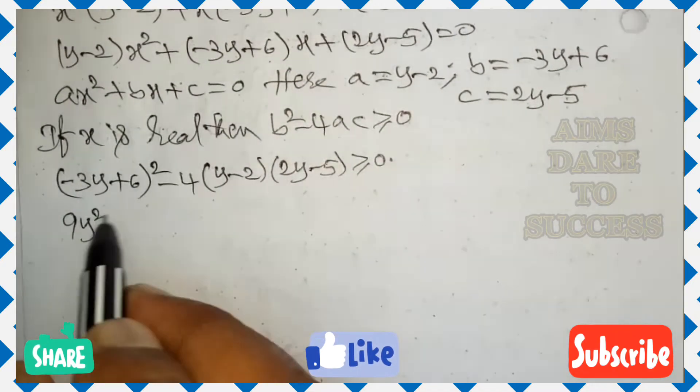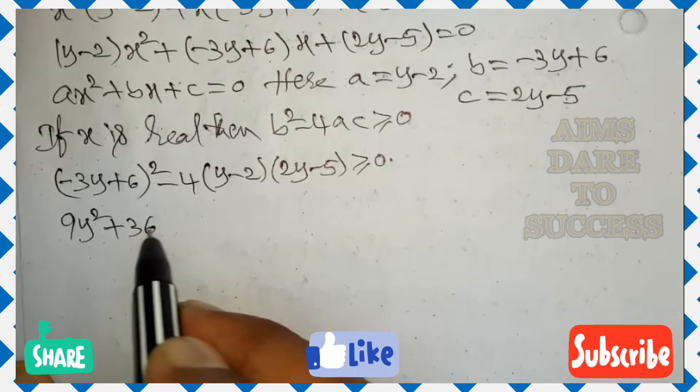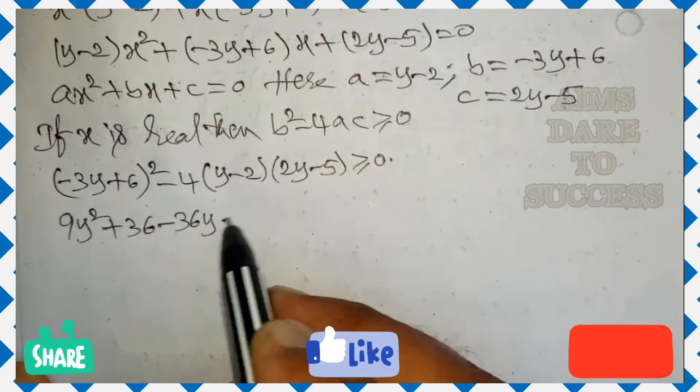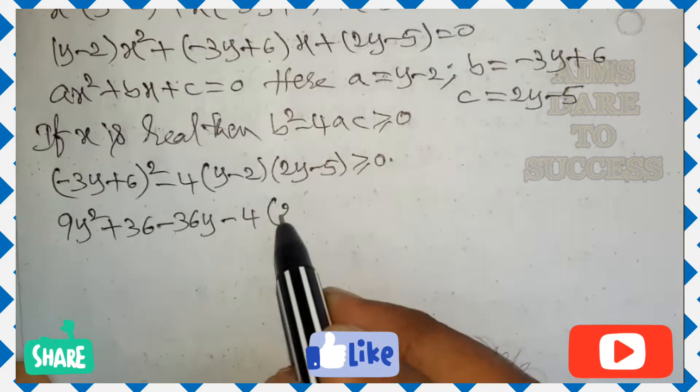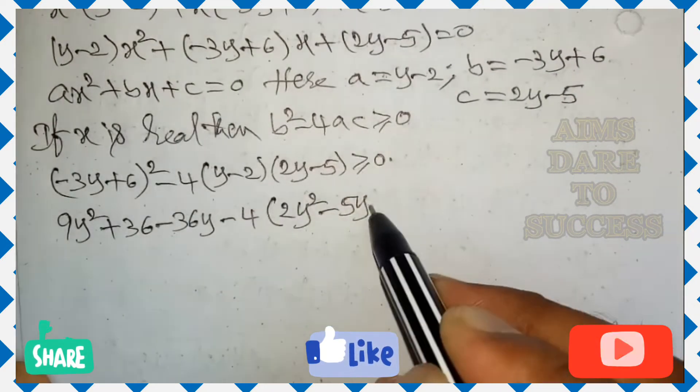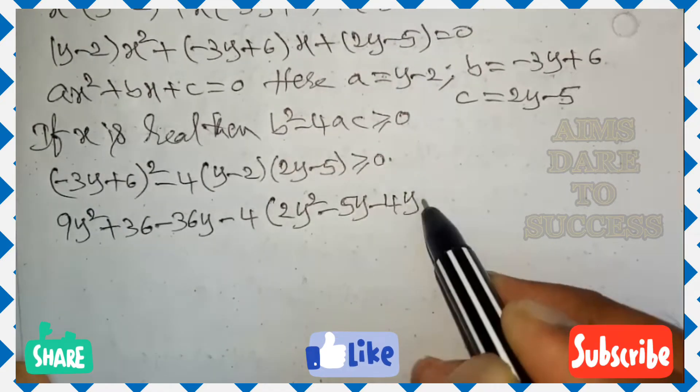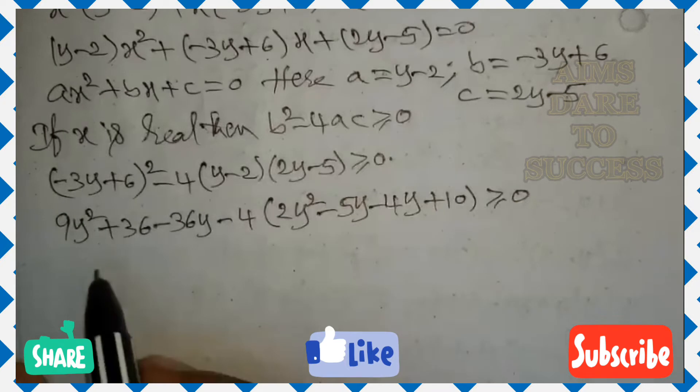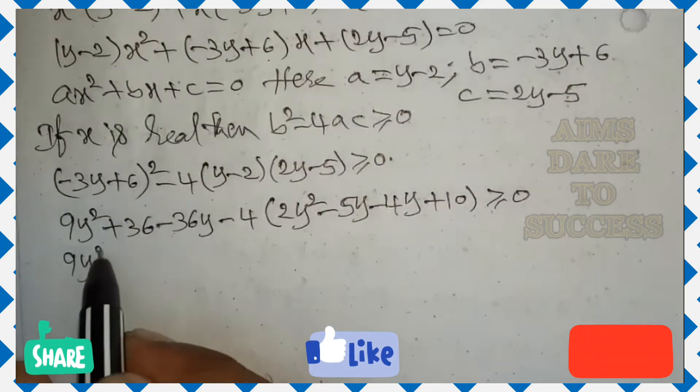a minus b whole square formula use. a square plus b square minus 2ab. 9y square plus 36 minus 36y minus 4 into y into 2y, 2y square minus y into 5, 5y minus 2 into 2y, 4y minus into minus plus 2 times 5 is 10 greater than or equal to 0.